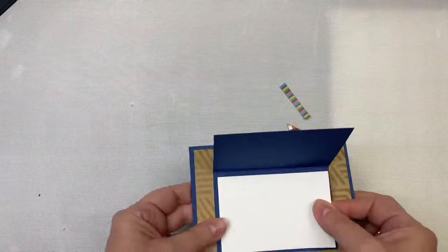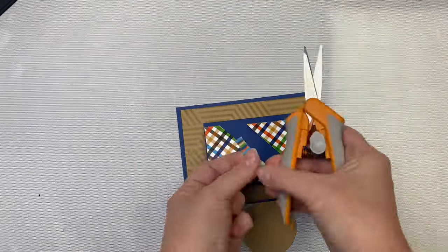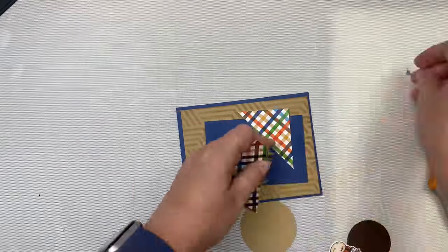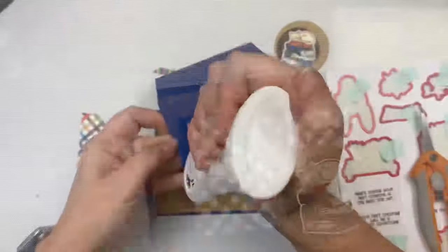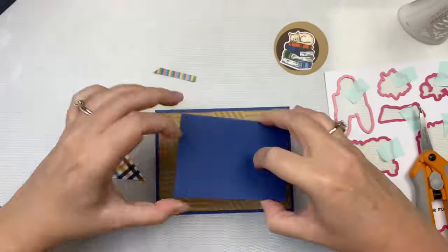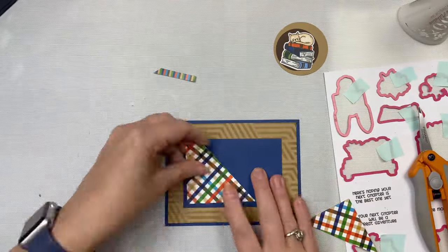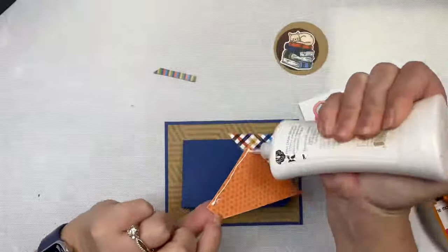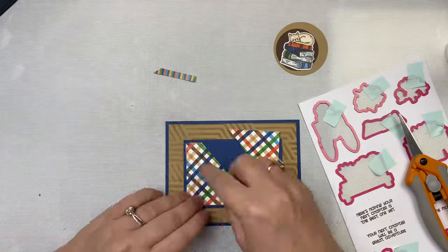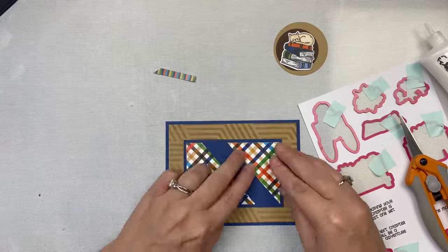The measurement for the smaller card is 4 by 5 and a half inches, and I scored this in half at 2 and three-quarter inches. Then I also cut out a white insert to go inside of that, that's a quarter inch smaller. I cut the end of that skinny strip at an angle and then glued everything down.